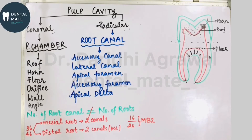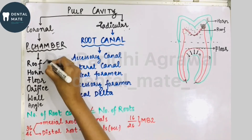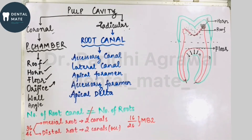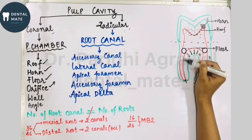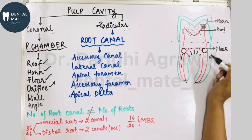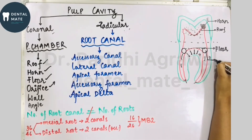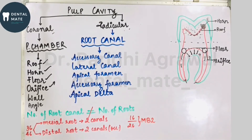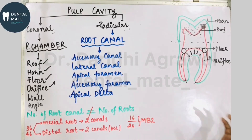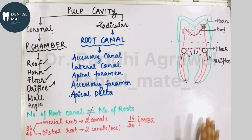The orifice is the opening of the floor into the root canal. This opening of the floor leading into the root canal is known as the orifice. Remember, these are not separate structures — the orifice is continuous with the pulp chamber and leads into the root canal.